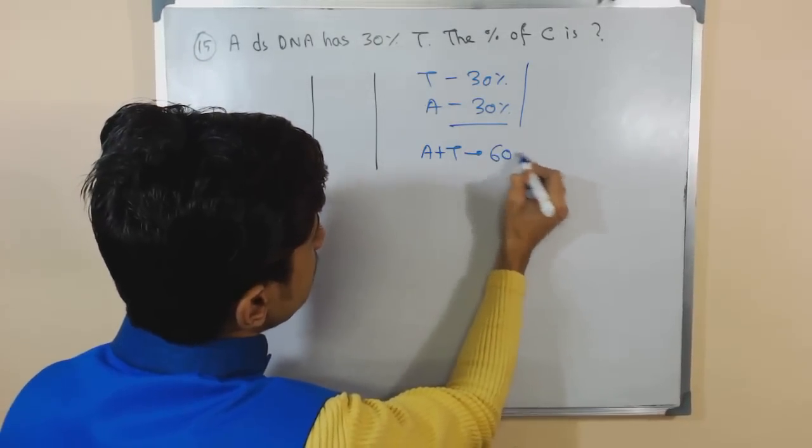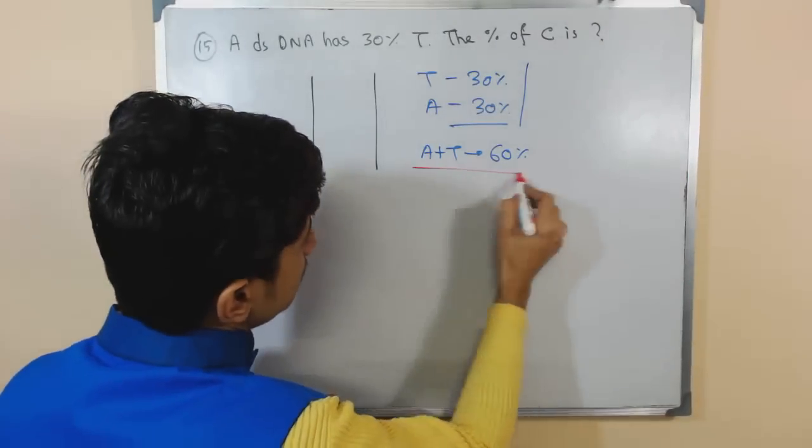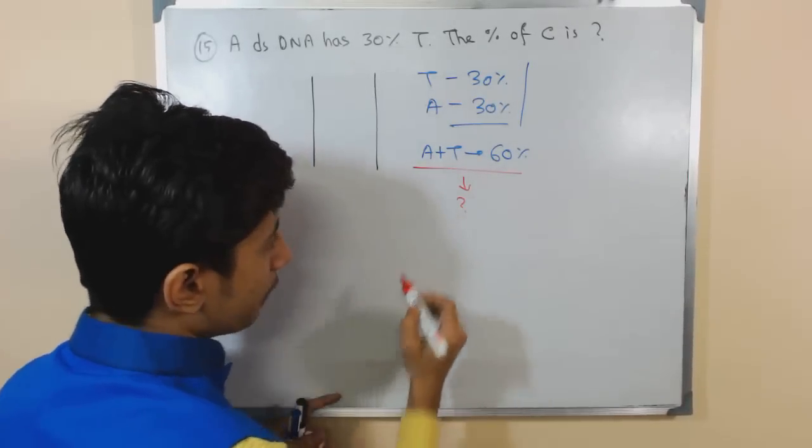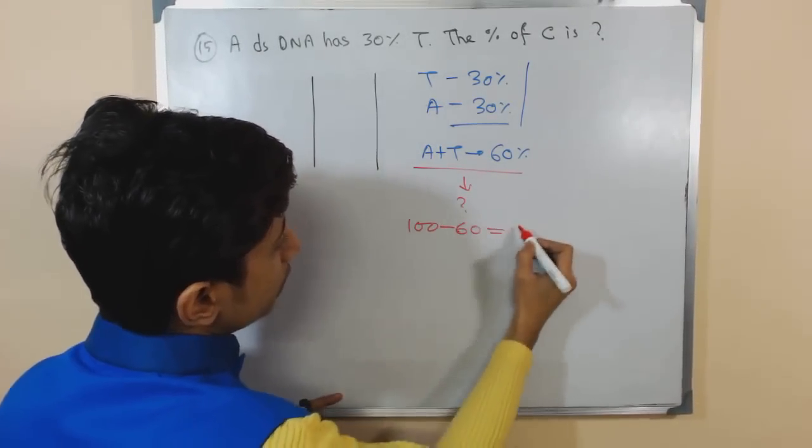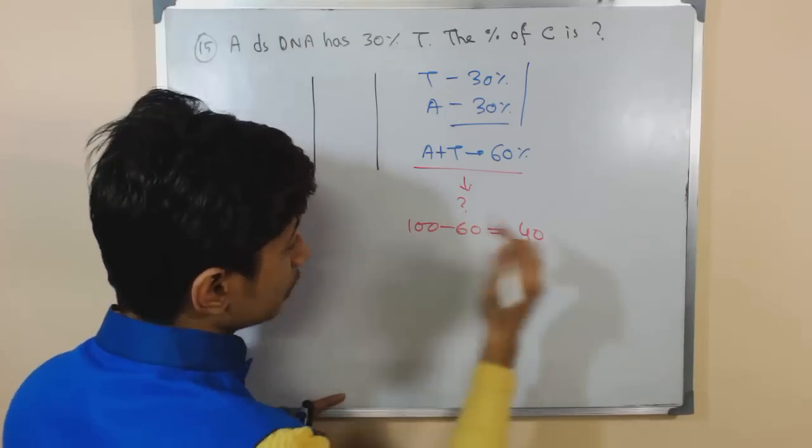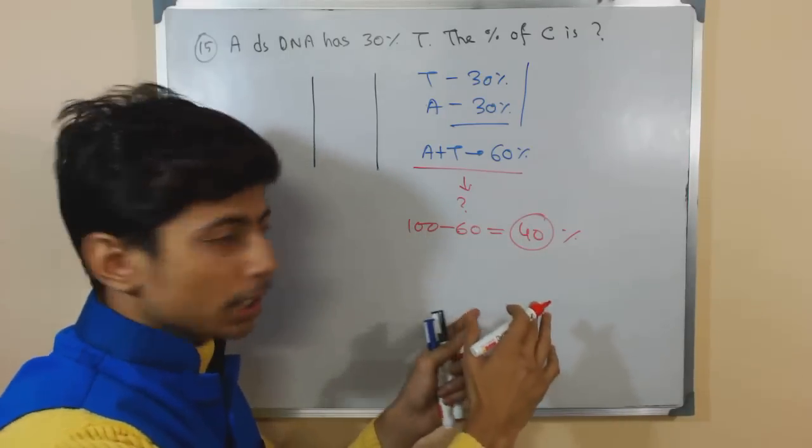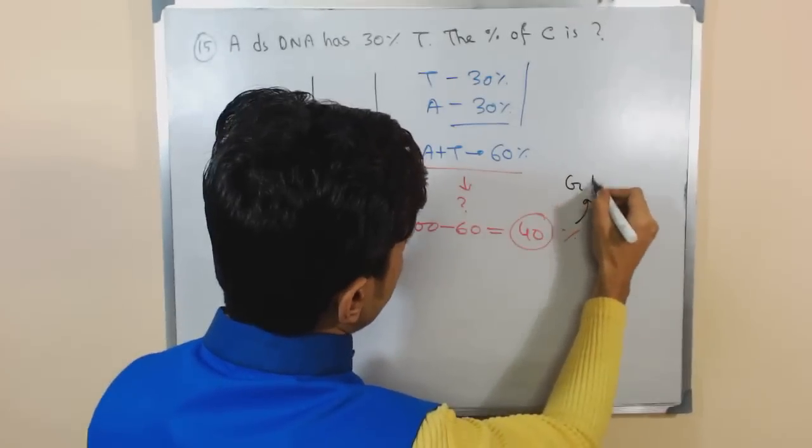On the other hand, if adenine and thymine is 60 percent, what will be the percentage remaining? From 100, if I subtract 60 percent, it will give us 40. So the rest of the 40 percent will definitely be guanine and cytosine.